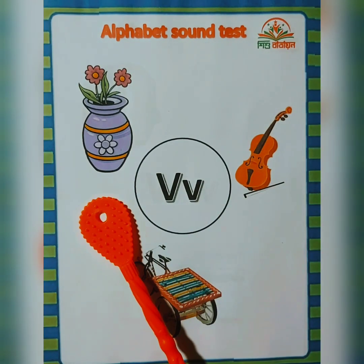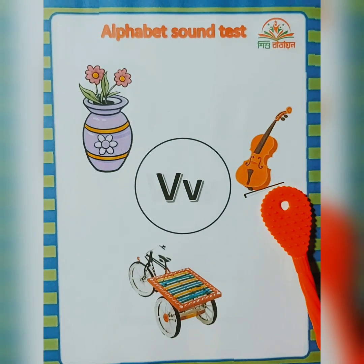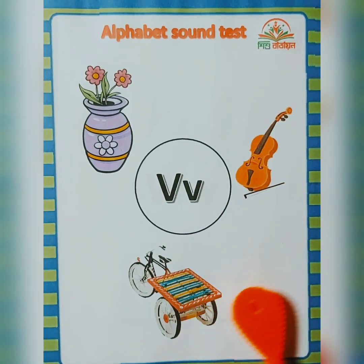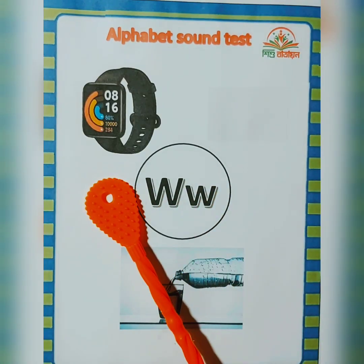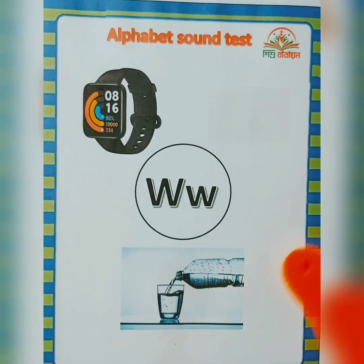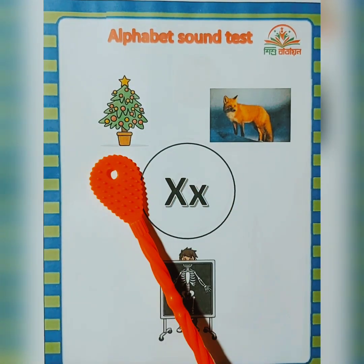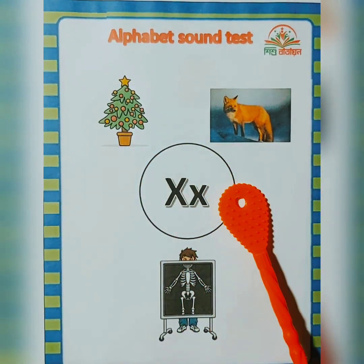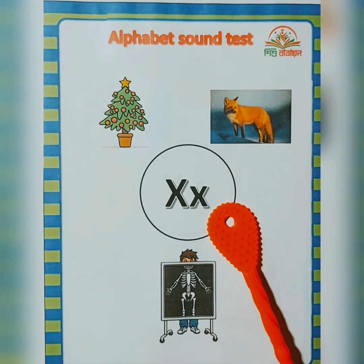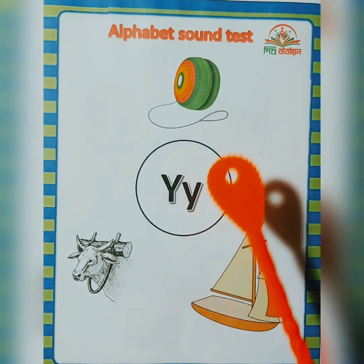V — violin, van. W — water. X — X-mas, X-ray, fox.